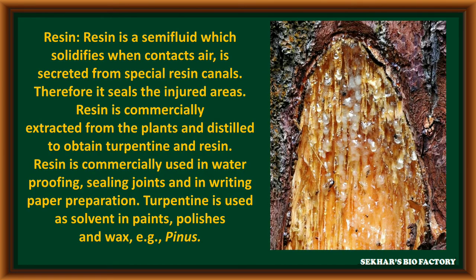One of the most important economic uses is resin. Resin is a semi-fluid which solidifies when it contacts with air. Generally, resins are secreted from special resin canals, sealing the injured areas on the surface of the stem. It is commercially extracted from the plant and distilled to obtain turpentine and resins. These resins are commercially used in waterproofing, sealing joints and writing paper preparation. Turpentine is used as a solvent in paint, polishing and wax industries. These are collected from Pinus.